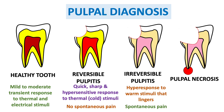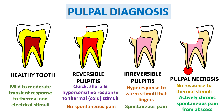In pulpal necrosis, the patient will not respond to thermal stimuli because the pulp is dead. However, there can be chronic spontaneous pain — not from the pulp, but from periapical pathology and abscess in the bone. The pulp is symptomatic in reversible and irreversible pulpitis but becomes completely asymptomatic in pulpal necrosis. In anterior teeth, you may see brownish discoloration due to long-term interruption of blood supply.